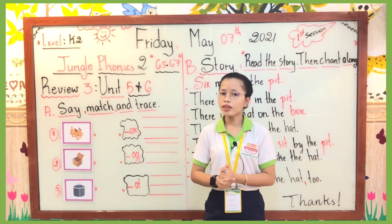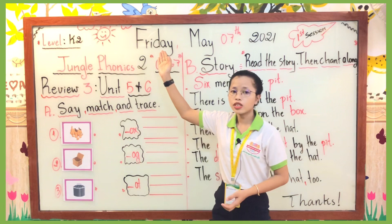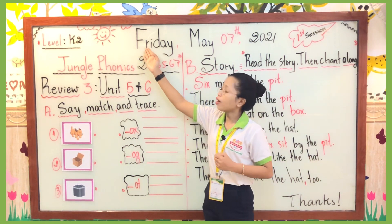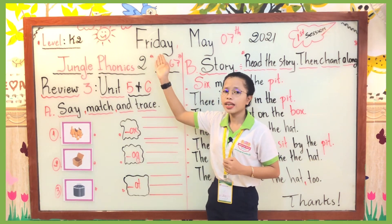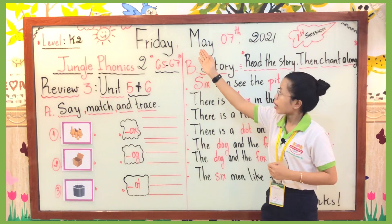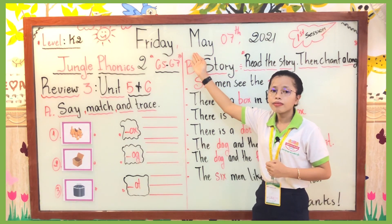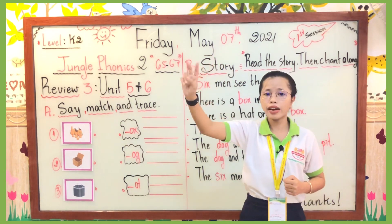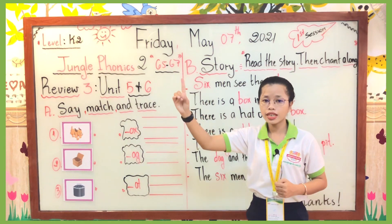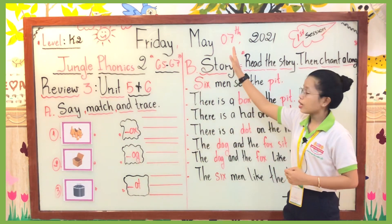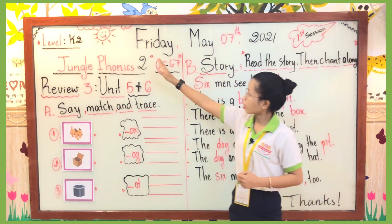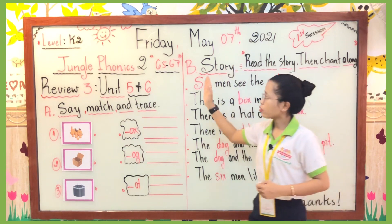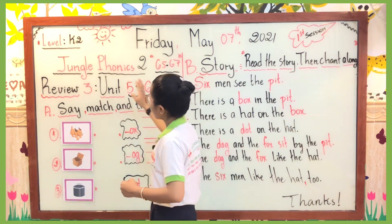Today is Friday — could you spell it? All together: F-R-I-D-A-Y, Friday. The month is May — spell it: M-A-Y, May. The date is the seventh. We have two letters on top — lowercase T and lowercase H. The year is 2021. Read again: Friday, May 7, 2021.